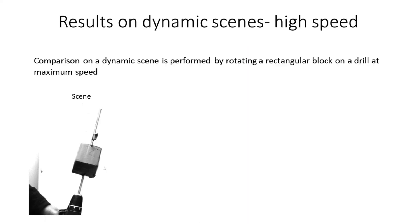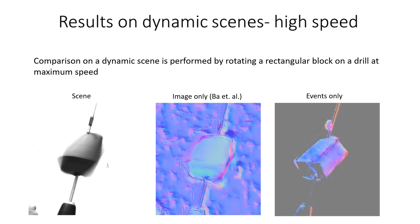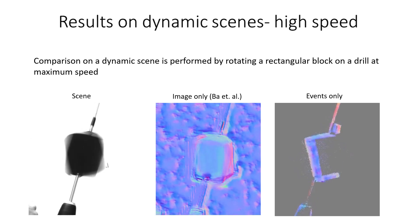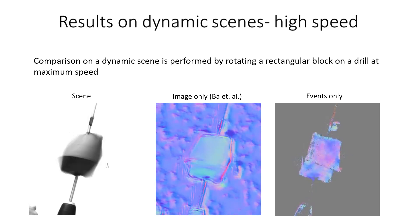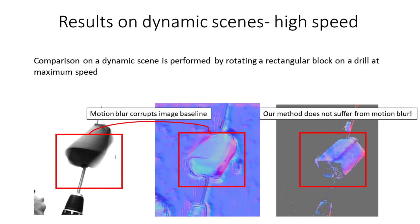An advantage of using an event camera is the high temporal resolution as compared to the frame-based sensor. To highlight this, we record a dynamic scene consisting of a rectangular block rotating about its diagonal axis with a drill. Increasing the speed introduces motion blur for the standard camera, which is also reflected in the surface normals. In contrast, event-based shape from polarization methods are better than the image-based counterpart, as can be seen by the sharpness of the edge of the rectangular block.